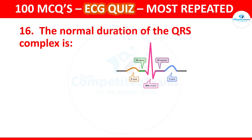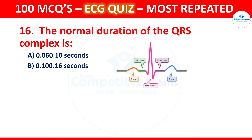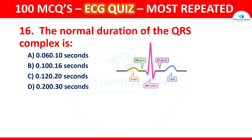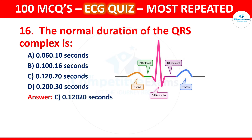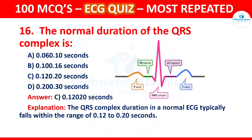Question 16: What is the normal duration of the QRS complex? Options are 0.06–0.10 seconds, 0.10–0.16 seconds, 0.12–0.20 seconds, or 0.20–0.30 seconds. The correct answer is 0.12–0.20 seconds. The QRS complex duration in a normal ECG typically falls within the range of 0.12 to 0.20 seconds.